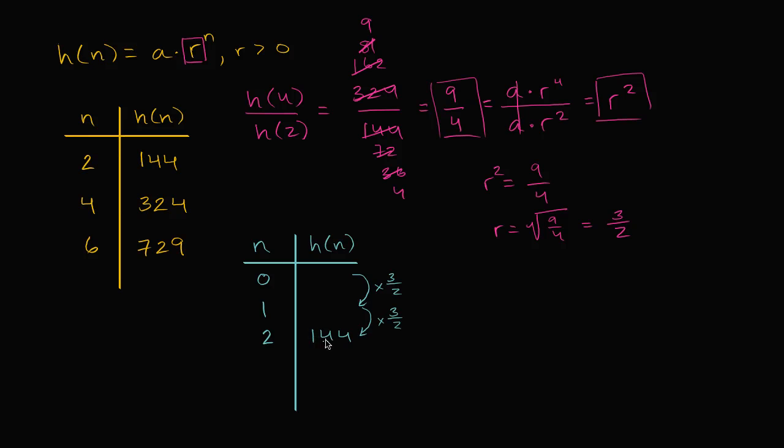So h of 1 is going to be 144 divided by 3 halves. So h of 1 is equal to 144 divided by 3 halves, which is going to be 144 times 2 over 3. And 144 divided by 3 is going to be, let's see, I'll just do this by hand. Three goes into 14 four times, four times 3 is 12, so it's going to be 48. Three goes into 24 eight times, eight times 3 is 24, you have no remainder. So this is going to be 48 times 2, which is going to be equal to 96. So this is going to be 96.